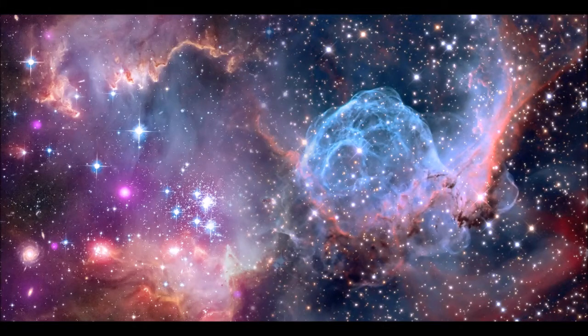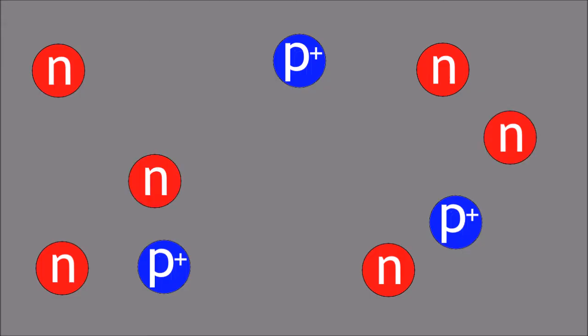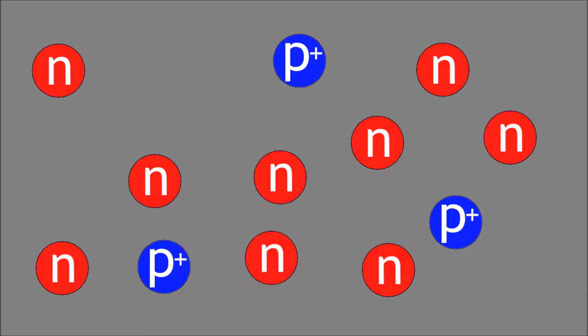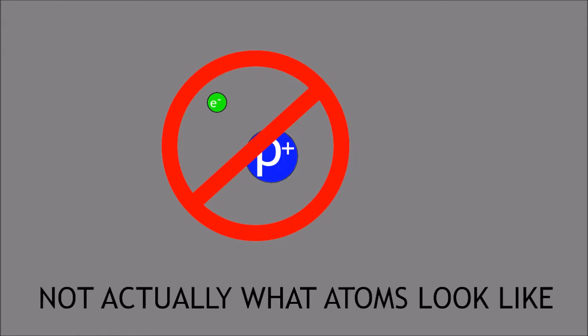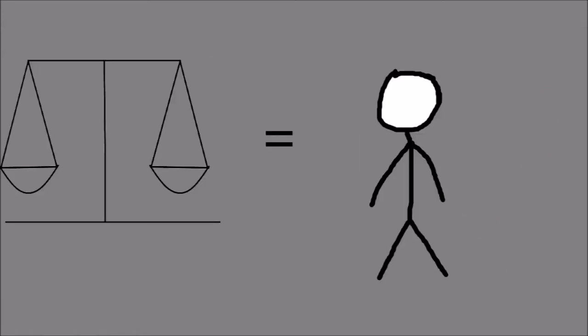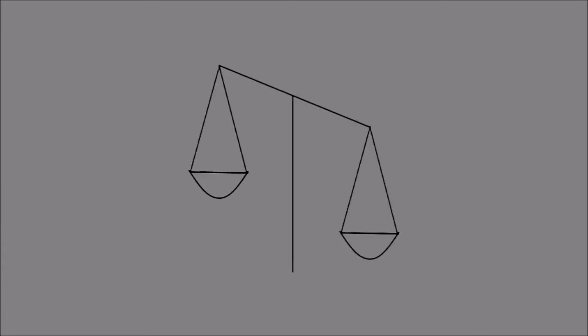As we all know, the universe is mostly comprised of delicate balances that keep it stable and within working condition. For example, an excess of neutrons within atoms would bar any separate elements like hydrogen from being able to be created. These balances allow us to have the diverse and complex systems that we depend on to survive. Yet this balance is disturbed in one of the most interesting places: the asymmetry between matter and antimatter.